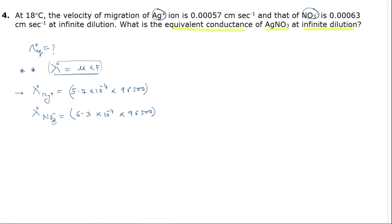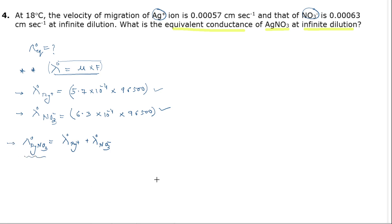We have the equivalent conductance of the positive ion and the negative ion. So we can simply write: equivalent conductance of silver nitrate will be equal to equivalent conductance of silver plus equivalent conductance of nitrate. On adding these two values, we will get the equivalent conductance at infinite dilution for silver nitrate. Remember this.